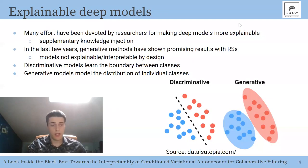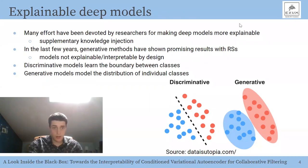There is a lot of skepticism in the usage of these black-box models. Many efforts have been devoted by researchers to address this. In most works, supplementary knowledge is injected to try to make deep models more explainable. However, in the last few years, generative methods have shown promising results with recommendation systems and are widely used instead of discriminative models. Examples include generative adversarial networks and variational autoencoders. However, these models are not explainable or interpretable by design, so an explanation is welcome — and this is what we have tried to do with this work.